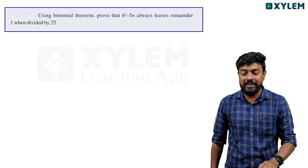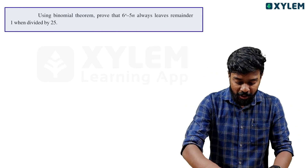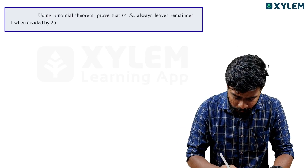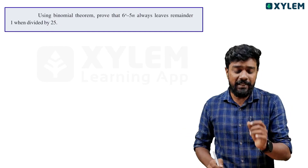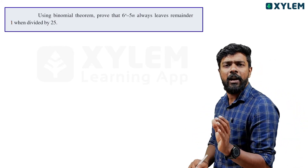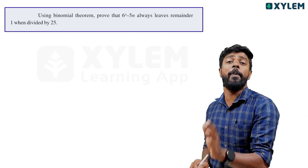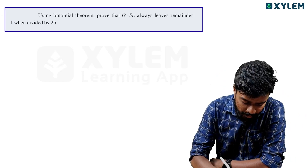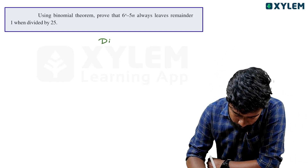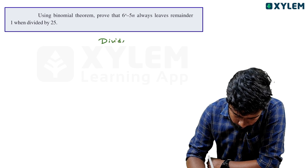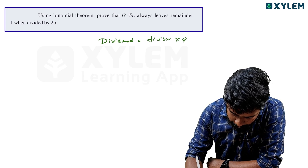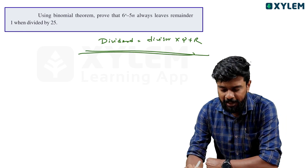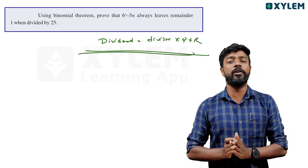Using the binomial theorem, we will prove that 6 raised to n minus 5 always leaves remainder 1 when divided by 25. So, dividend equals divisor into quotient plus remainder.